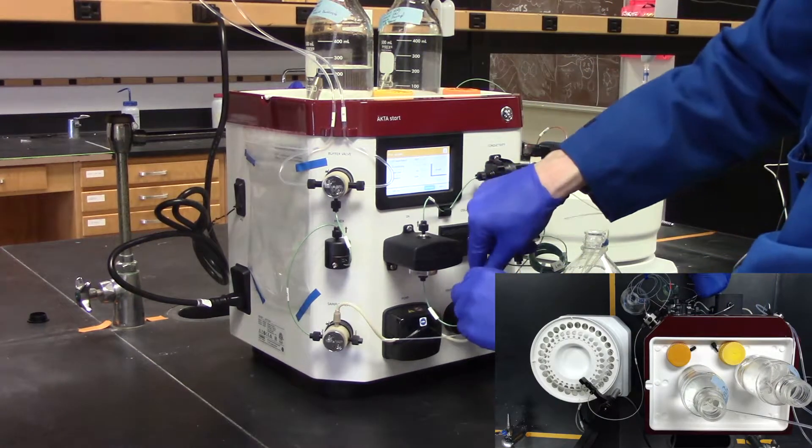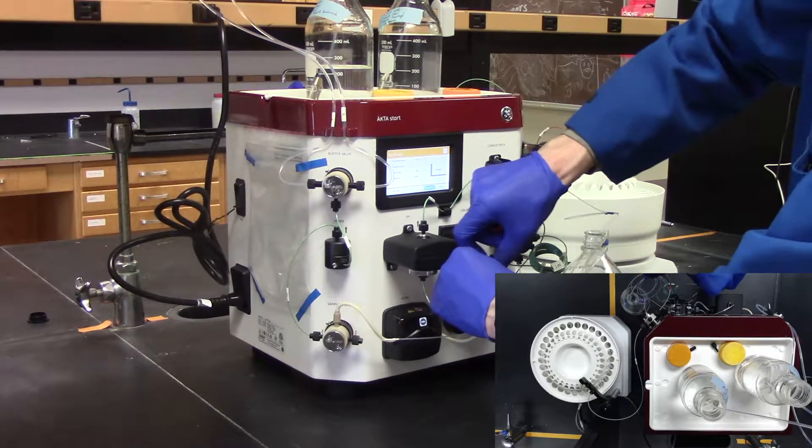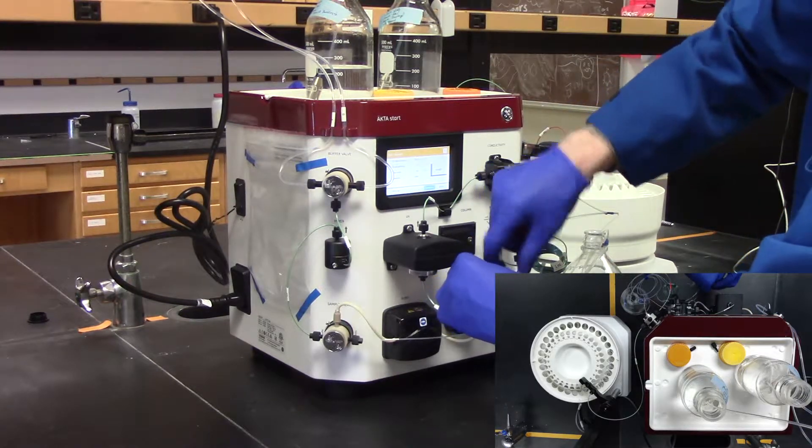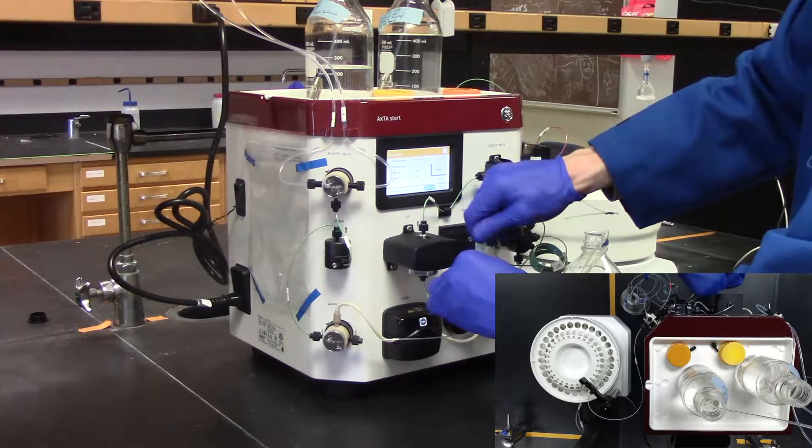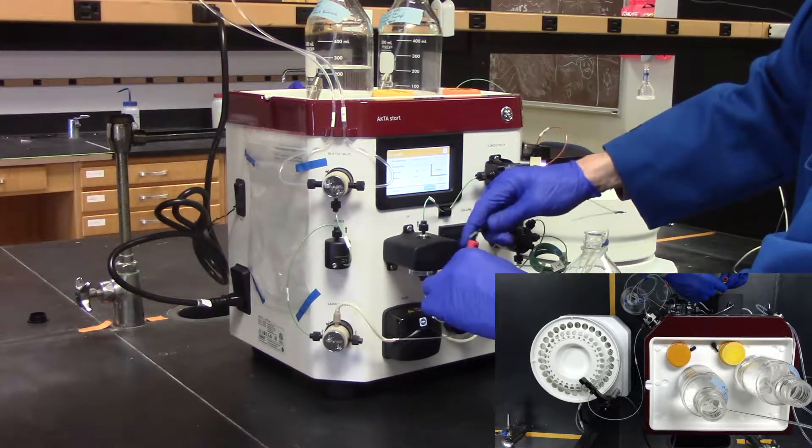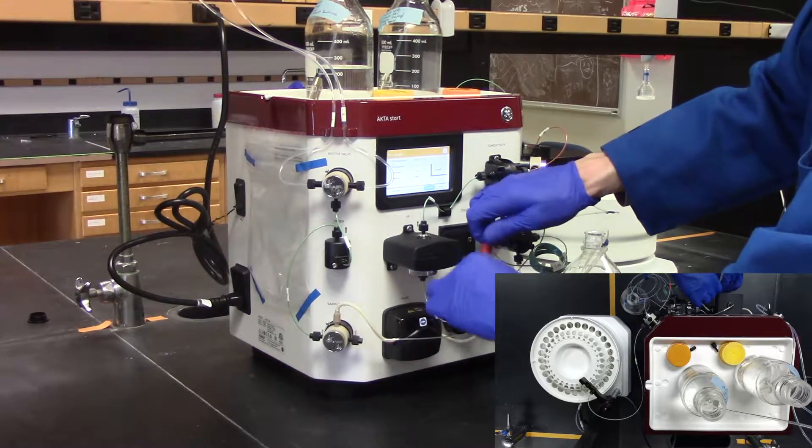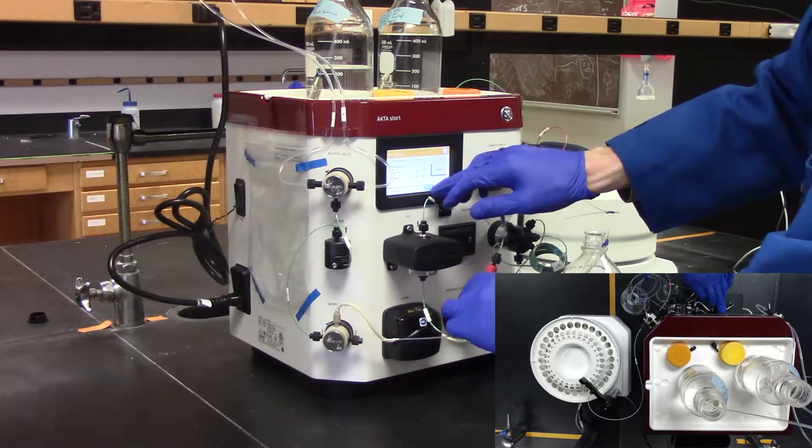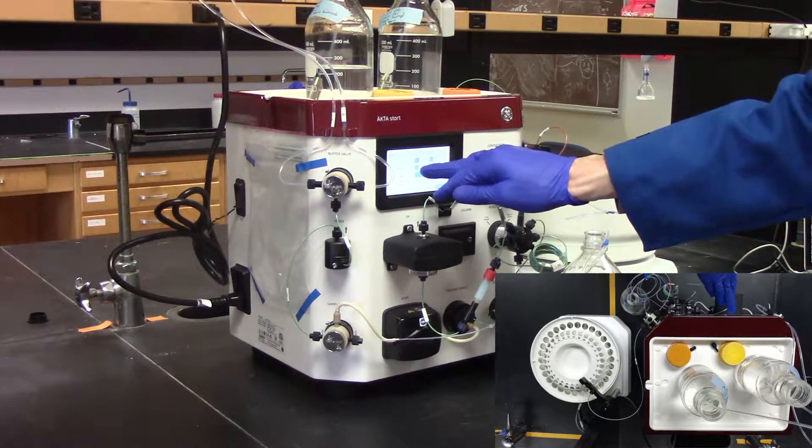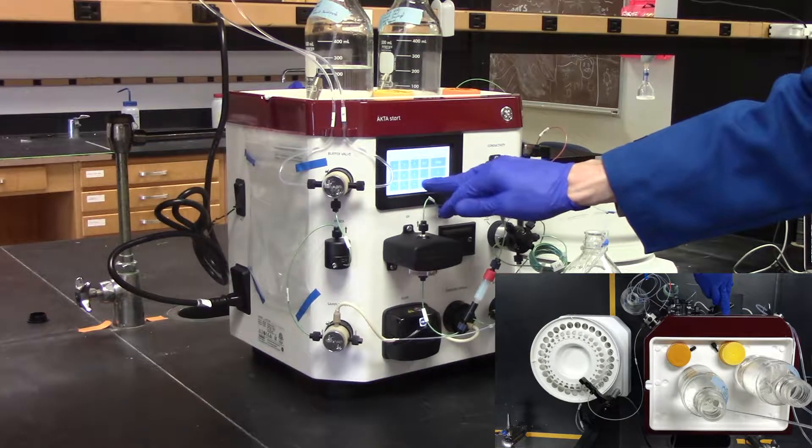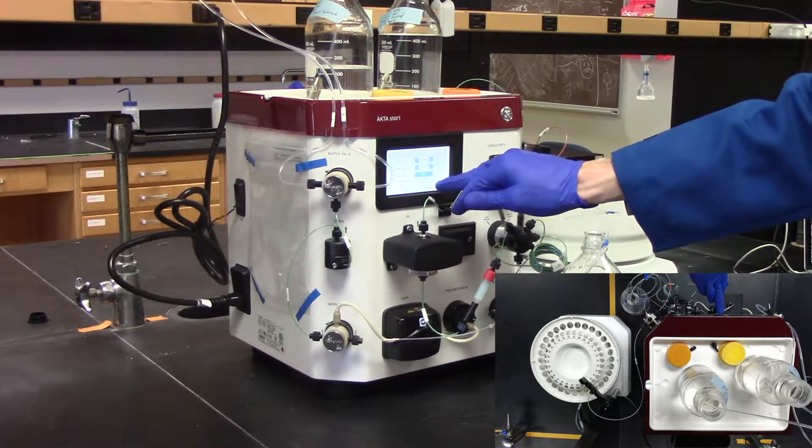Next, we need to add your His column to the FPLC. Unscrew the coupling on the His column before the UV detector. Insert your FPLC column on the coupling and on the line. Change the flow of the FPLC so that the buffer flows through the column. Reduce the flow rate to 1 mls per minute for our 1 mL His column, or up to 5 mls per minute for our 5 mL His column.